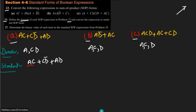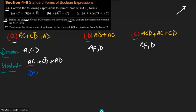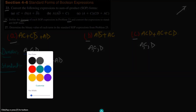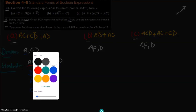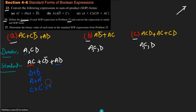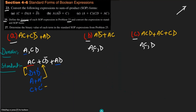In the first term AC, we can see that D is missing. So what we have to do is multiply by D + D', which is always equal to 1. In the term CD', we can see that A is missing, so we have to multiply by A + A' equal to 1, because 1 is the multiplicative identity and it gives the same answer. Similarly, in the term AD, C is missing, so we write C + C' equal to 1 and multiply it in.